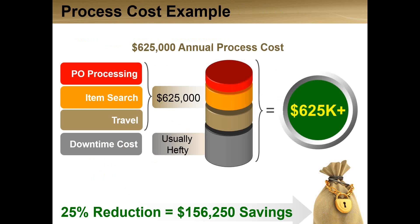In that previous example of $625,000 worth of annual process costs, made up primarily of PO processing, item search, and travel time activities — and we're not even talking about downtime yet, which can be a big number — if you could reduce that processing time by adding technology and getting better consistency and adherence to your processes, reducing by 25%, which is very reasonable depending on your starting point, you could reduce your process costs by about $156,000 in this particular example.